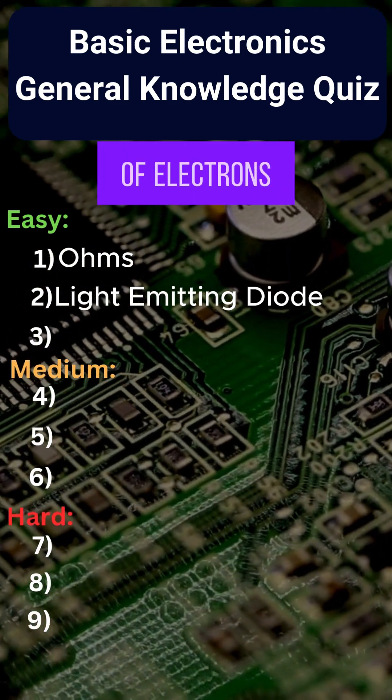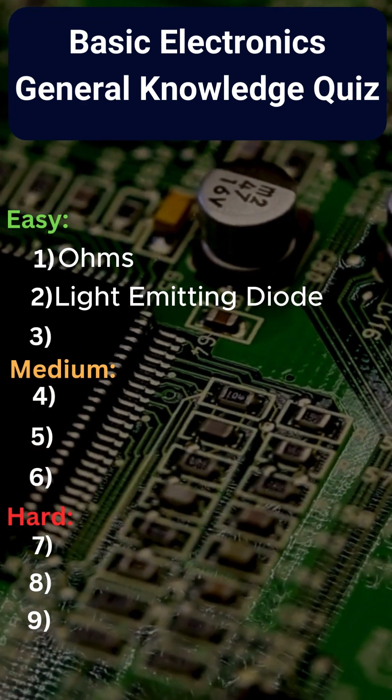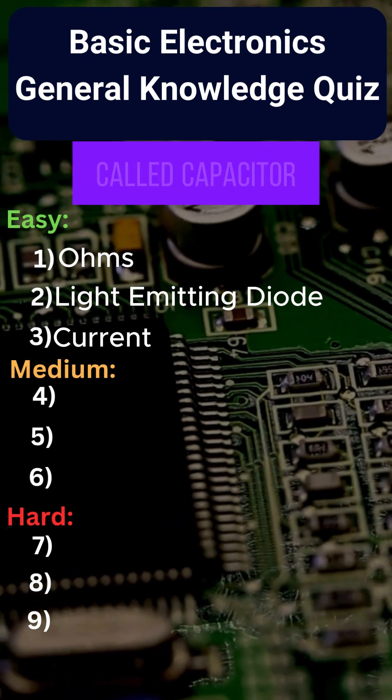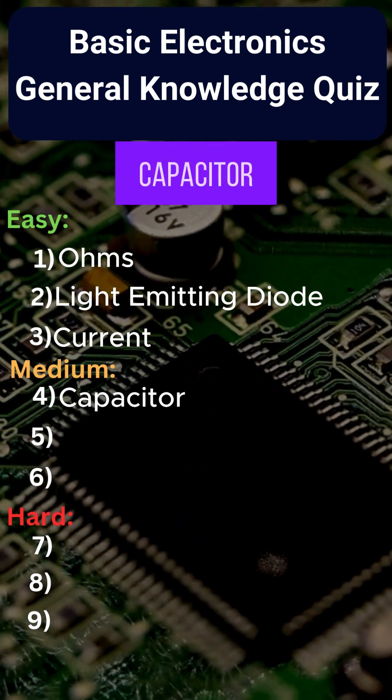What is the flow of electrons called? Current. A device that stores electrical charge is called? Capacitor.